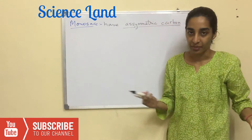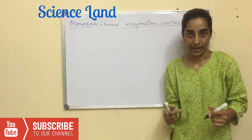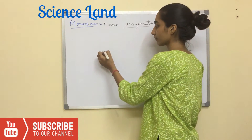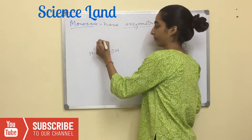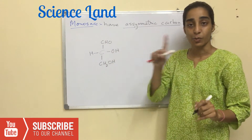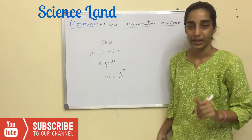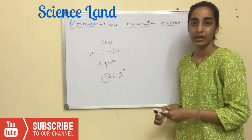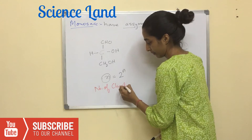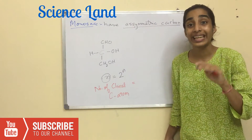Now we have studied about asymmetric carbon and chiral carbon. There is a formula: for glyceraldehyde, which has one asymmetric carbon, n equals 1. The formula is 2^n, where n is the number of chiral carbons, and 2^n gives the number of stereo isomers.